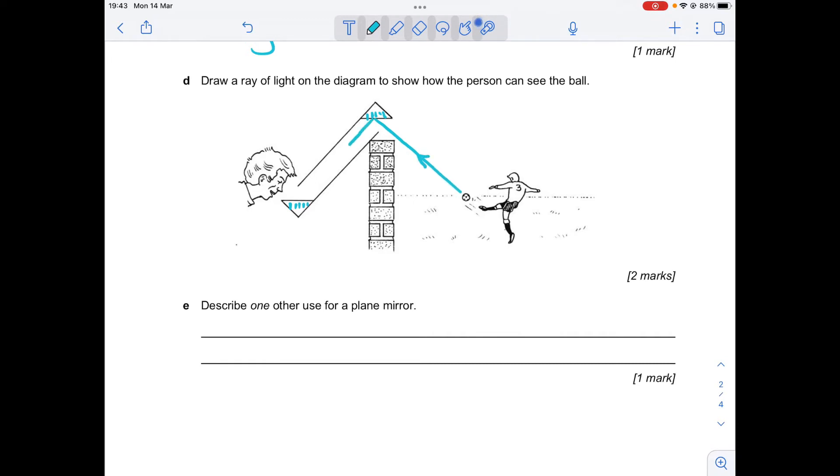So I know the light ray from the ball is going to go that way. It's going to hit that mirror. It's going to move down the periscope. So I need an arrow to show that direction. Then it's going to hit that mirror and it's going to reflect at the same angle.